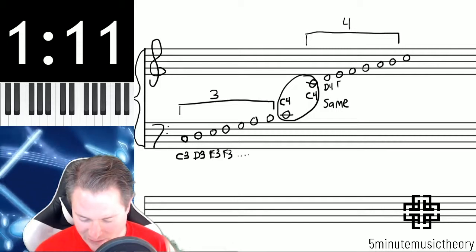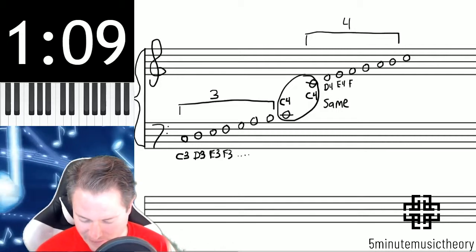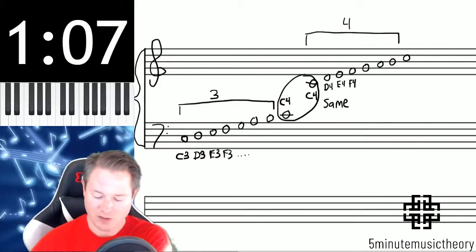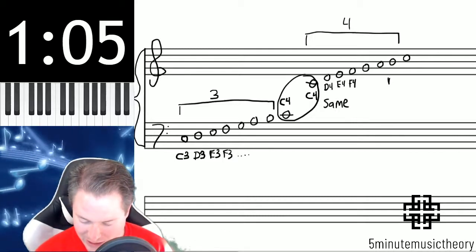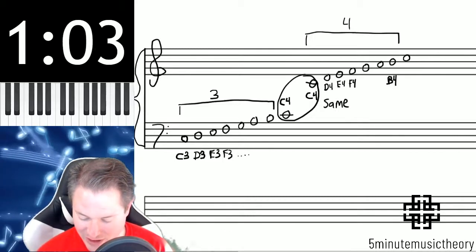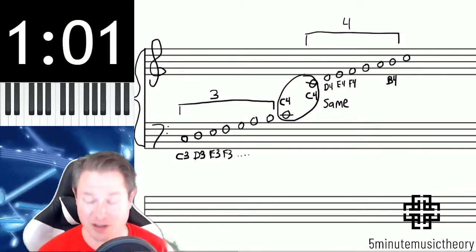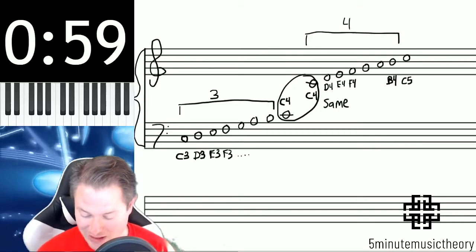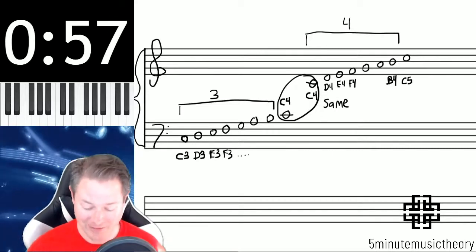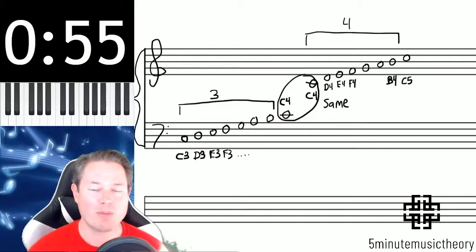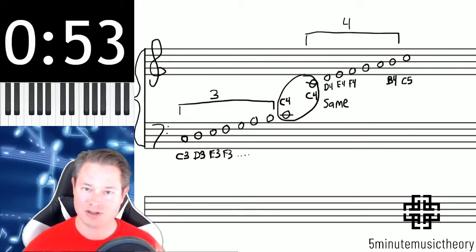So this would be a D4, E4, F4, so on and so forth. This would be a B4 and then we reach another C. Every time you reach a C when you're going up, the number changes. So this would be a C5.